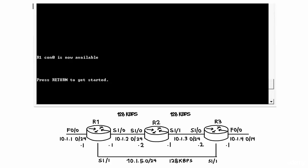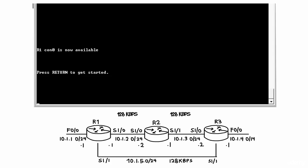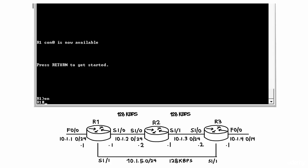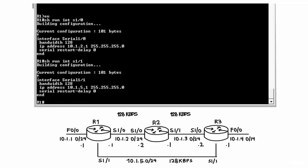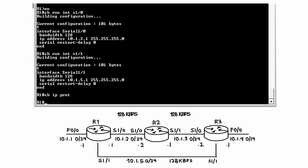Note that the link speeds of these Serial links have been set to 128 kilobits per second. On Router 1, 'show run interface Serial 1.0' shows the IP address and that bandwidth has been configured to 128 kbps. The same information is visible on Serial 1.0.1. 'Show IP protocols' confirms that no routing protocols have been enabled on this router.